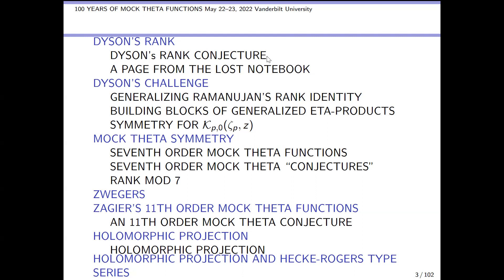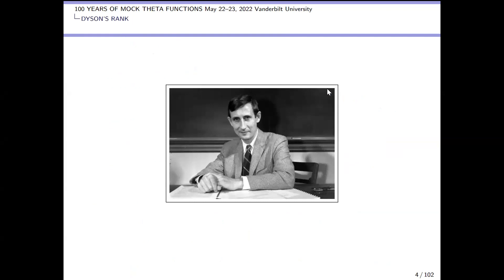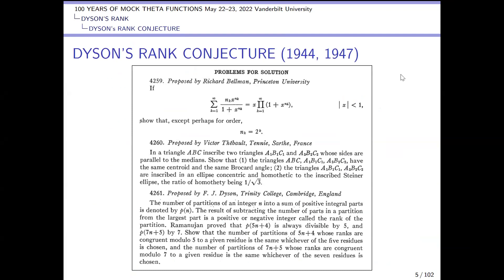There's a young picture of young Dyson. Dyson's rank conjecture goes back to 1944, but he actually posted it as a problem in the American Mathematical Monthly. I shall read it to you: the number of partitions of an integer into a sum of positive integral parts is denoted by p(n). The result of subtracting the number of parts in a partition from the largest part is a positive or negative integer called the rank of the partition. Ramanujan proved that p(5n+4) is always divisible by 5, and p(7n+5) by 7.